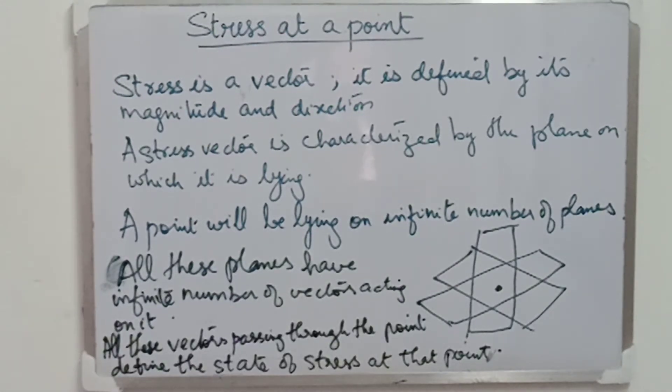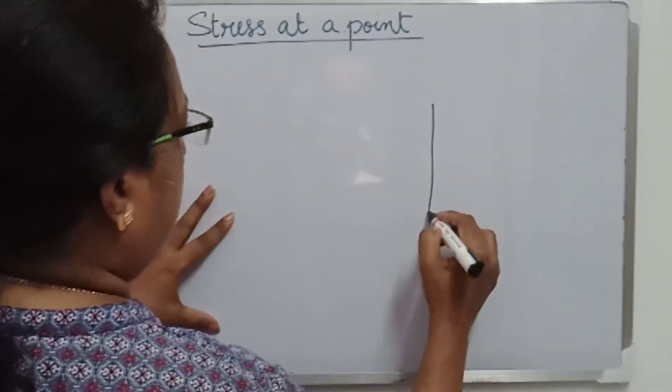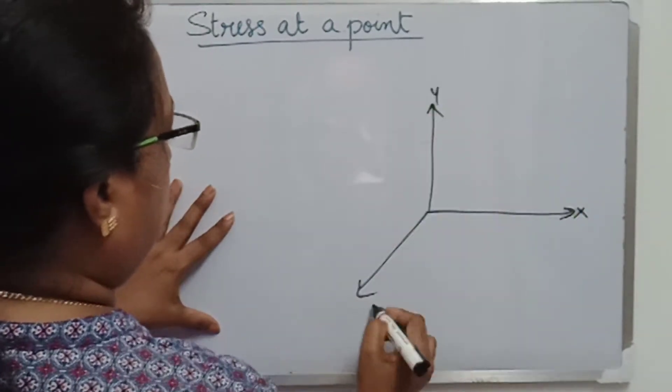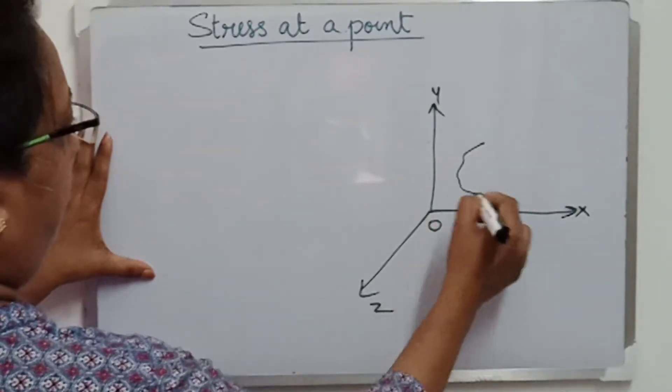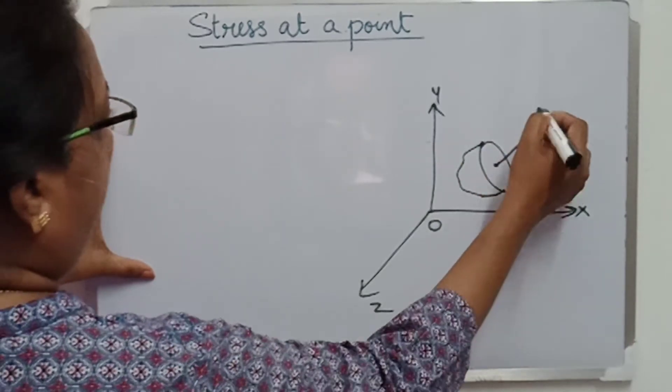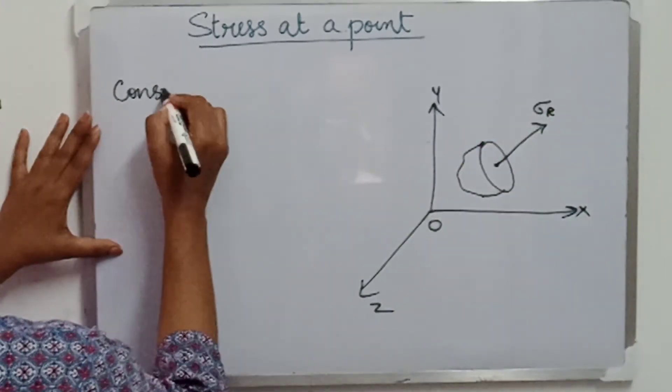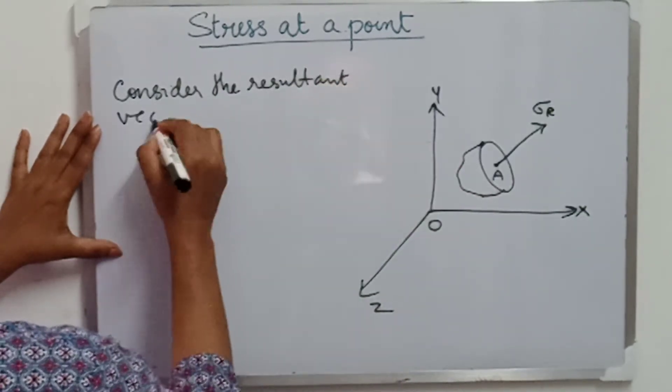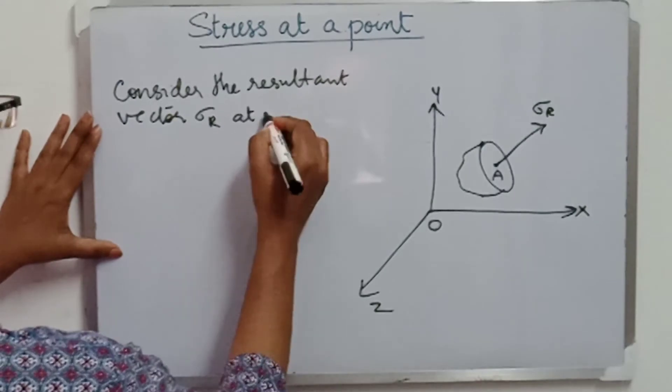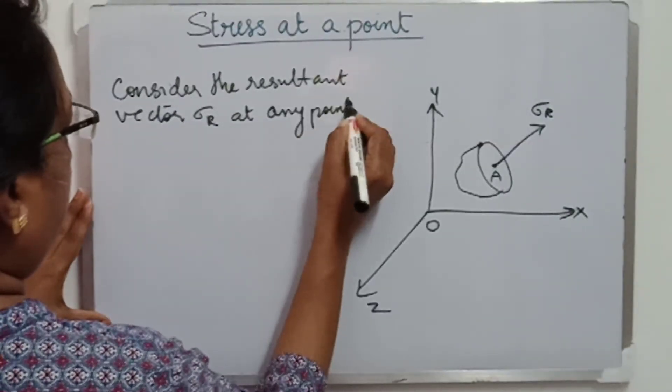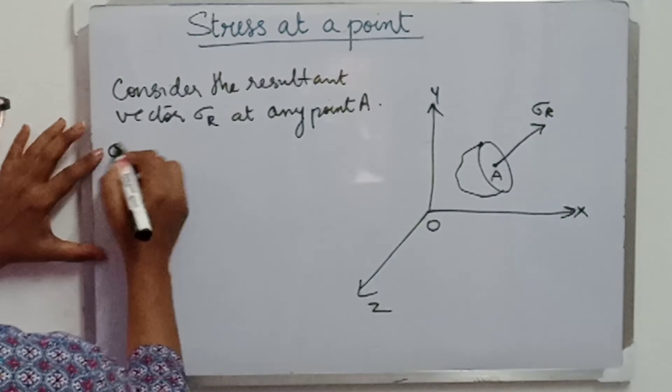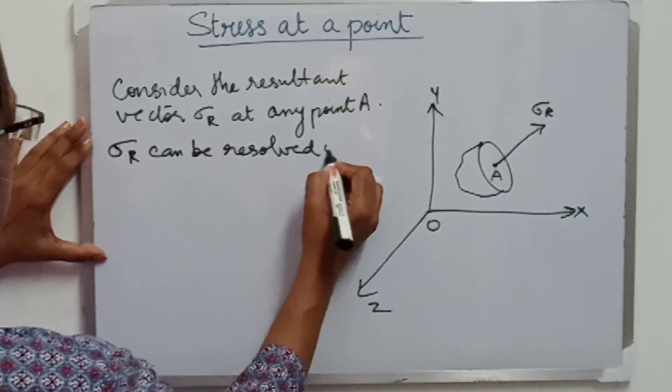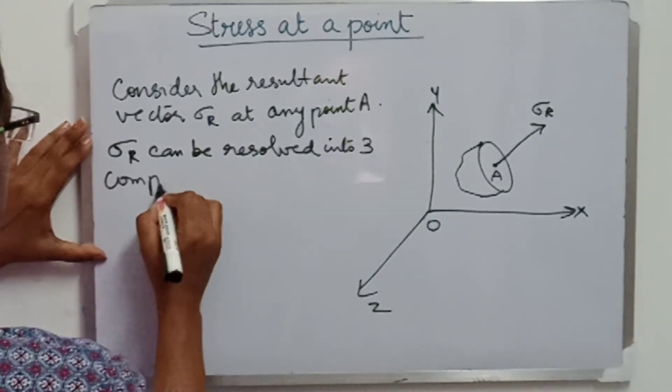And all these vectors passing through the point define the state of stress at that point. To explain the stress at a point, let us consider a Cartesian coordinate system with x, y, z axis and origin O. Consider a point A on a body given here and it is sectioned like this. The resultant vector at this point A is denoted by sigma r.